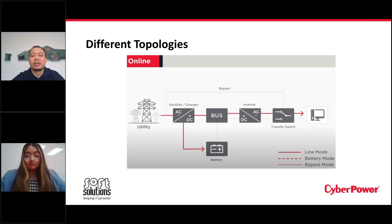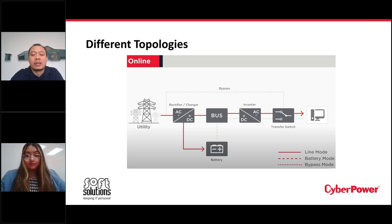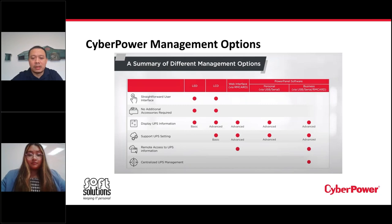The third and last topology is called online, or double conversion, because the UPS converts incoming AC power to DC and then back to AC while charging its internal batteries, providing ideal output power. When utility power fails, it switches to battery mode to keep loads operating, and then the bus supplies buffer energy to prevent total energy drop during switch operations — giving you zero transfer time. I'll now hand over to Anisha to touch on the CyberPower management options.